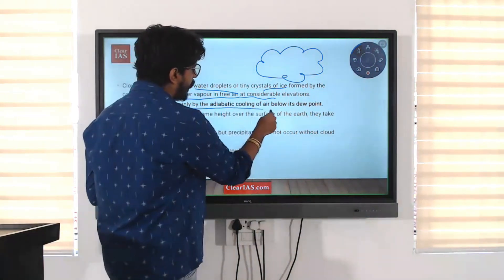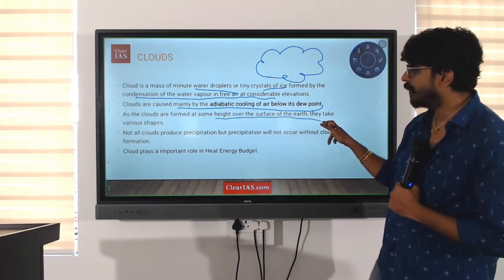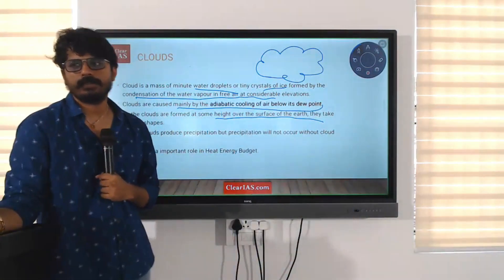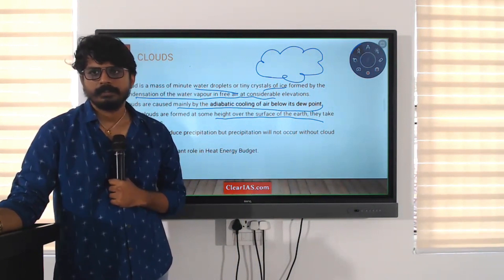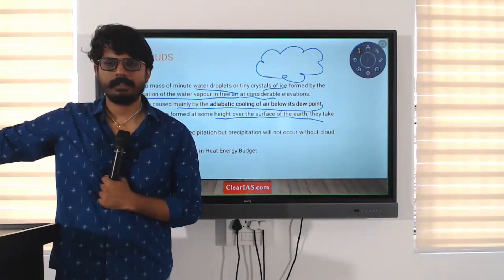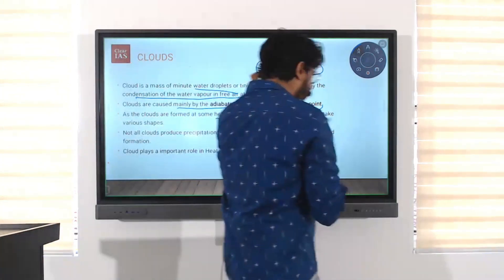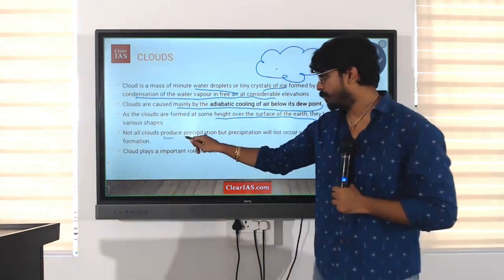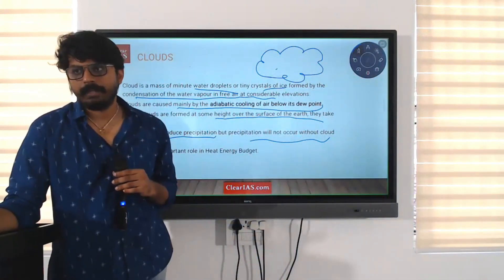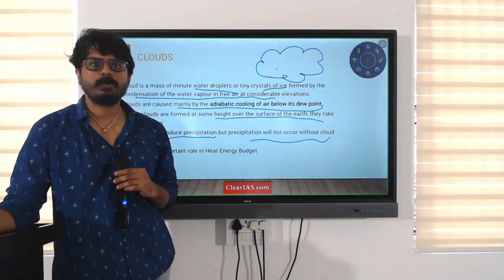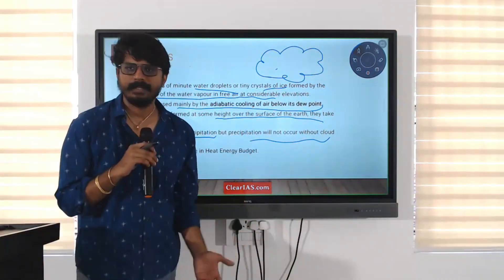Clouds are caused mainly by the adiabatic cooling of air below its dew point. As clouds are formed at some height over the surface of the earth, they take various shapes — some are continuous and flat like a bed sheet, and some are just puffy. Not all clouds produce precipitation, but precipitation will not occur without cloud formation. It plays an important role in the heat energy budget.